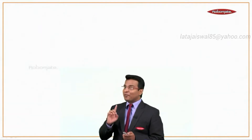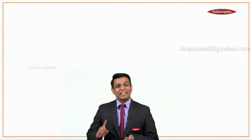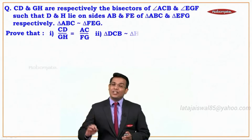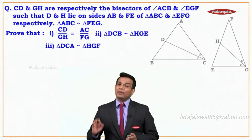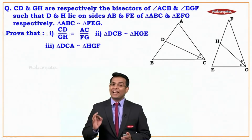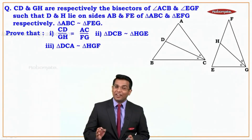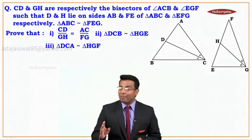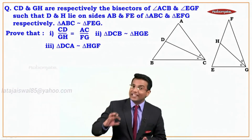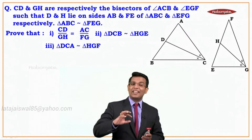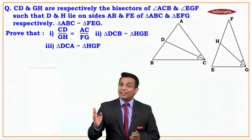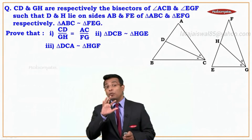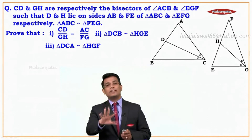We are doing a very important and interesting sum. It says CD and GH are respectively the bisectors of angle ACB and angle EGF, such that D and H lie on sides AB and FE of triangle ABC and triangle EFG respectively. Triangle ABC is similar to triangle FEG, and we have to prove three things.